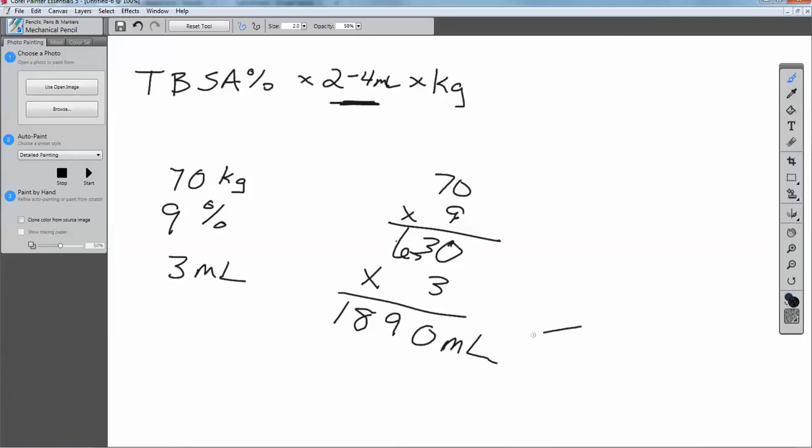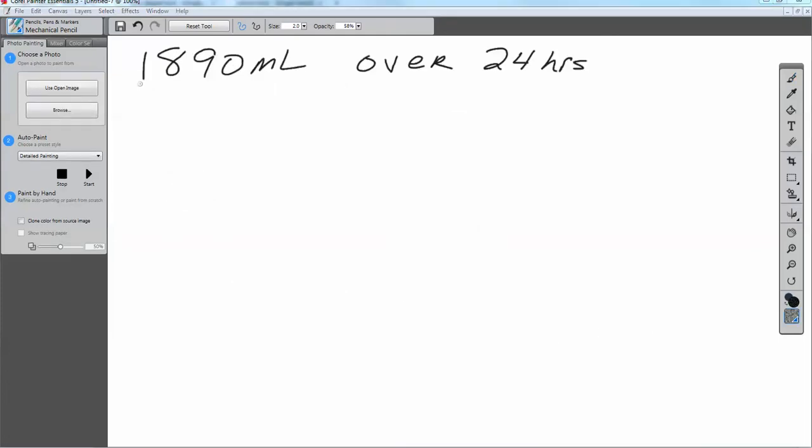You would end up with 1,890 milliliters that you're going to give in total. And that is over a 24 hour period. We know that we have to give the 1,890 milliliters over that 24 hour period in order to care for that 9% burn. In order to do this, over the first 8 hours, when you lose the most amount of fluid, you need to give half the total dose.